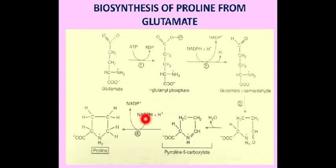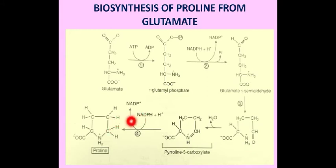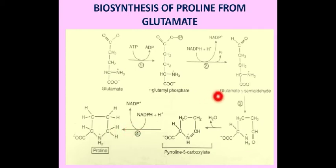In the fourth step, pyrroline-5-carboxylate is reduced by the enzyme pyrroline carboxylate reductase. The double bond between NH and CH is reduced to a single bond, converting pyrroline-5-carboxylate to proline. Thus, proline is synthesized from glutamate by a four-step reaction, in which glutamate-gamma-semialdehyde is an important metabolic intermediate.